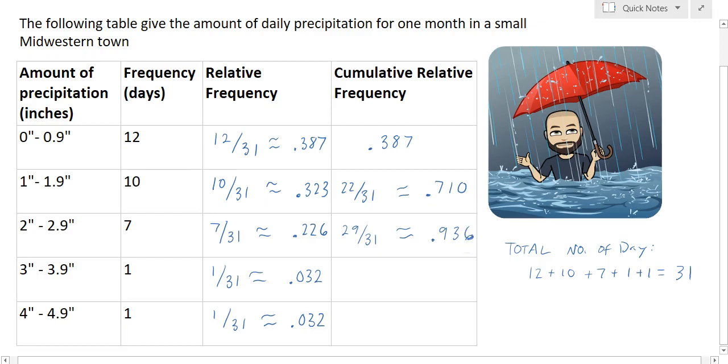And again, this indicates that 94% of the days of the month had 2.9 inches of rain or less. And then if I add my 1 day of between 3 and 3.9 inches of rain, that would give me a cumulative relative frequency of 30 over 31, which is approximately 0.968.